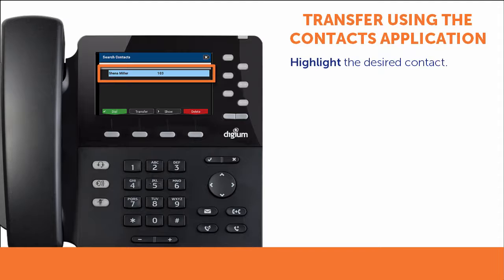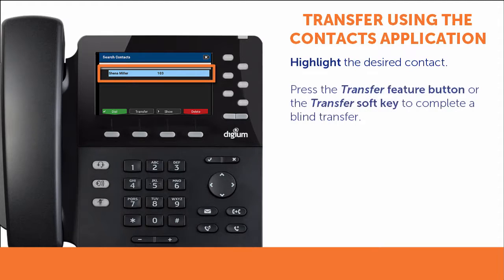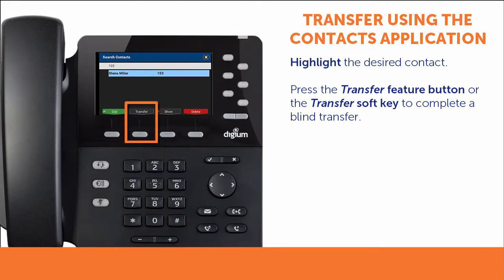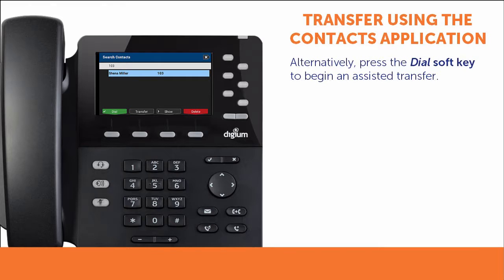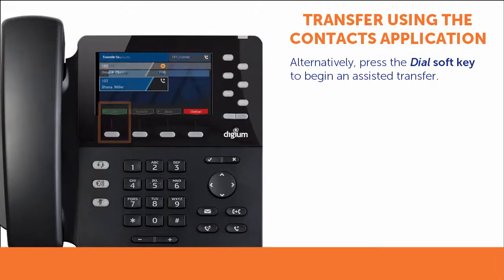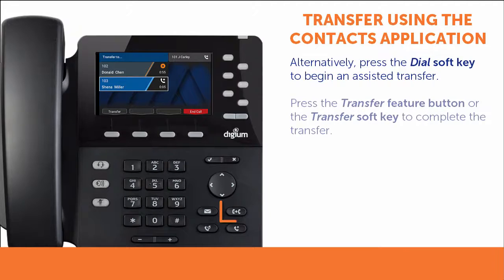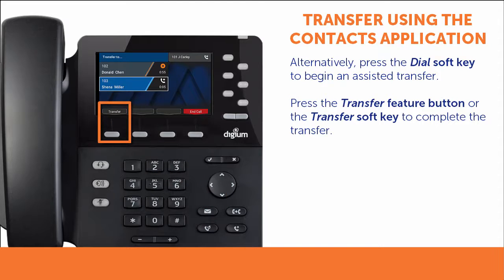Once you find the contact you want, be sure it is highlighted. To complete a blind transfer, press the Transfer Feature button or Transfer soft key. To begin an assisted transfer, press the Dial soft key. When you press Dial, you begin a new call to the contact to whom you are attempting to transfer. If you wish to complete the assisted transfer, press the Transfer Feature button or Transfer soft key while speaking with your contact.